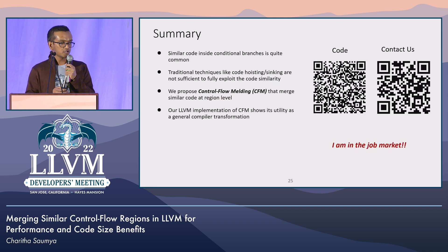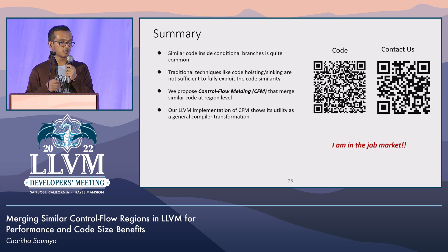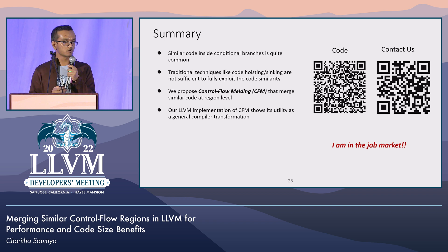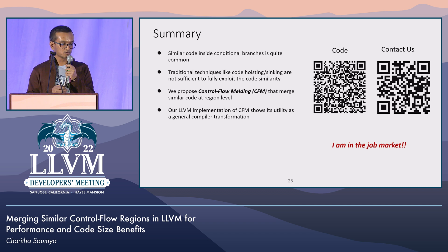In summary, similar code inside conditional branches is quite common in real code, but traditional compiler techniques cannot fully exploit this opportunity. We proposed a new transformation called control flow melding, which can merge control flow at the region level. Our LLVM implementation of CFM shows it is very useful in several applications. Our code is open source, and you can contact the authors via the website. I'm also graduating soon and looking for full-time compiler engineering roles — happy to talk.